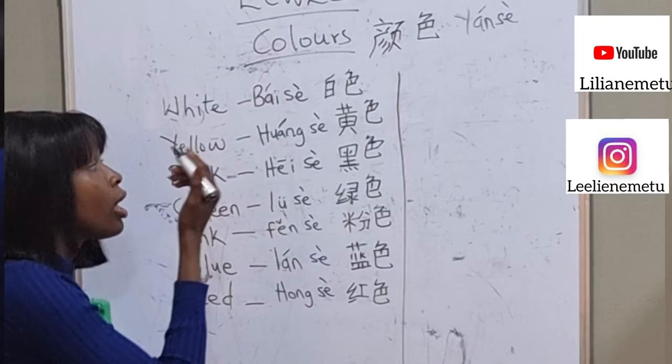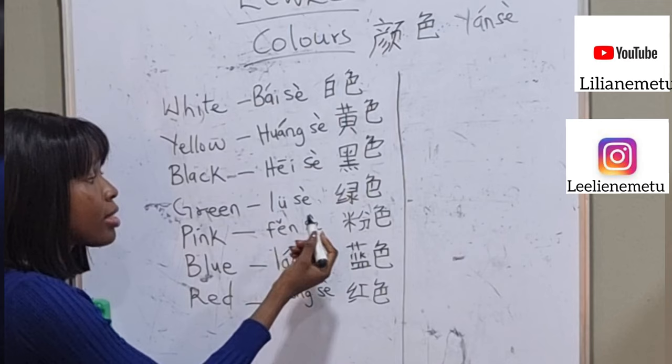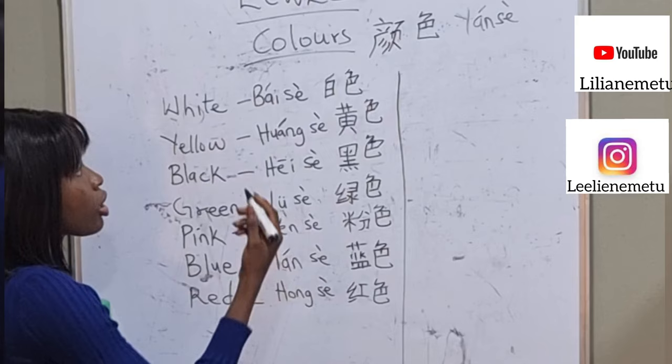Green is lǜ sè. Pink is fěn sè. Blue is lán sè. Red is hóng sè.